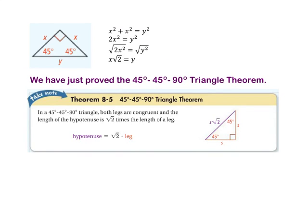By using the Pythagorean theorem to solve for the length of y, we just proved the 45-45-90 triangle theorem. In a 45-45-90 triangle, both legs are congruent and the length of the hypotenuse is the square root of 2 times the length of a leg.